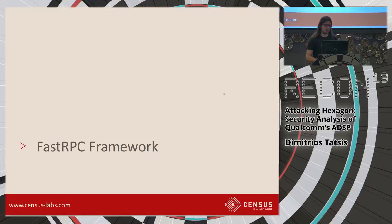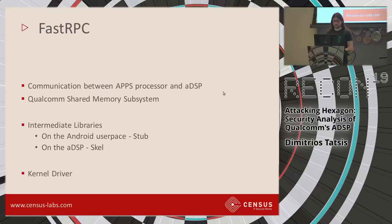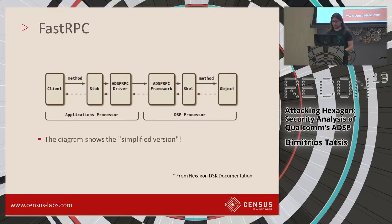Now I'm going to take a deep dive into the FastRPC framework, which is the communication between the ADSP and the rest of the system. It is built on top of Qualcomm's shared memory subsystem. It has intermediate libraries on the Android userspace side called stub libraries, and on the ADSP side it has the so-called skel libraries. There's also a kernel driver on the Android kernel responsible for this communication. This is a simplified diagram from Qualcomm documentation, but the reality is a bit more complicated.